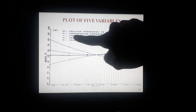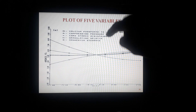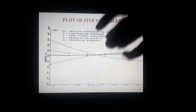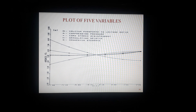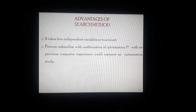For five variables at a time — calcium phosphate, compression pressure, corn starch disintegrant, granulating gelatin, and magnesium stearate as x1, x2, x3, x4, x5 — we find the effect of individual or cumulative factors upon hardness and dissolution rate at 30 minutes. The advantage of the search method is that it takes defined dependent variables into account. Persons unfamiliar with the mathematics of optimization and with no previous computer experience could carry out an optimization study perfectly.